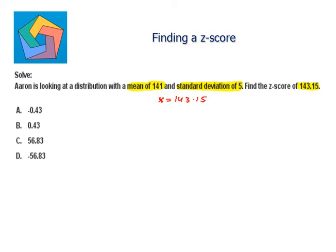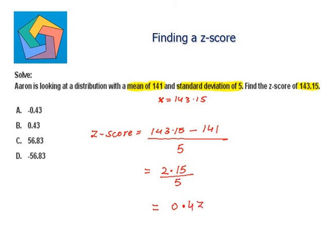So z-score is equal to 143.15 minus mean is 141 divided by standard deviation is 5. 143.15 minus 141 equals 2.15 divided by 5, which is equal to 0.43, which is the answer in the B part.